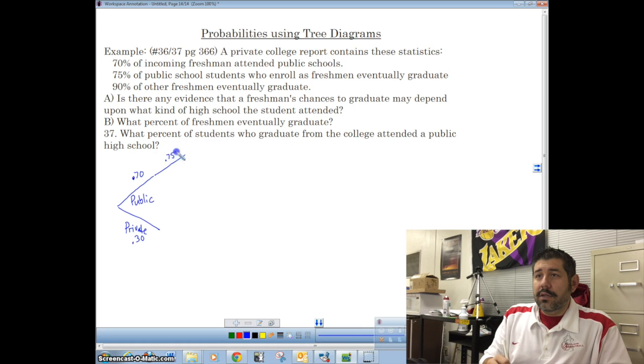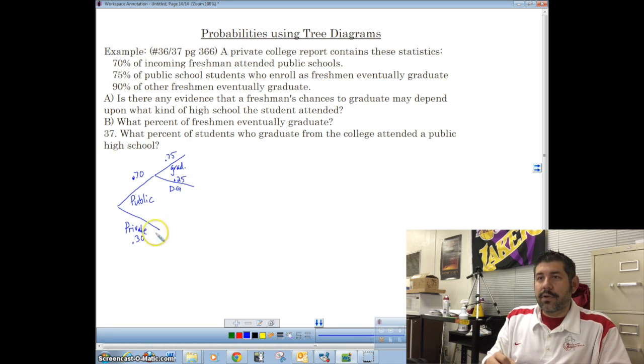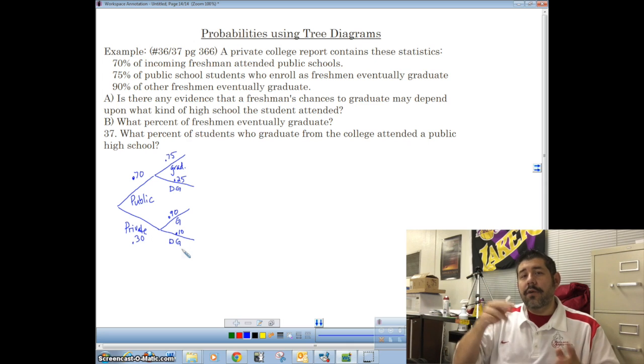Well, 75% graduate. And 25% do not graduate. I'll put DG for do not graduate. Now, for the private school students, 90% of these graduate, whereas only 10% do not graduate. So you see how we can branch off from those different probabilities dependent.